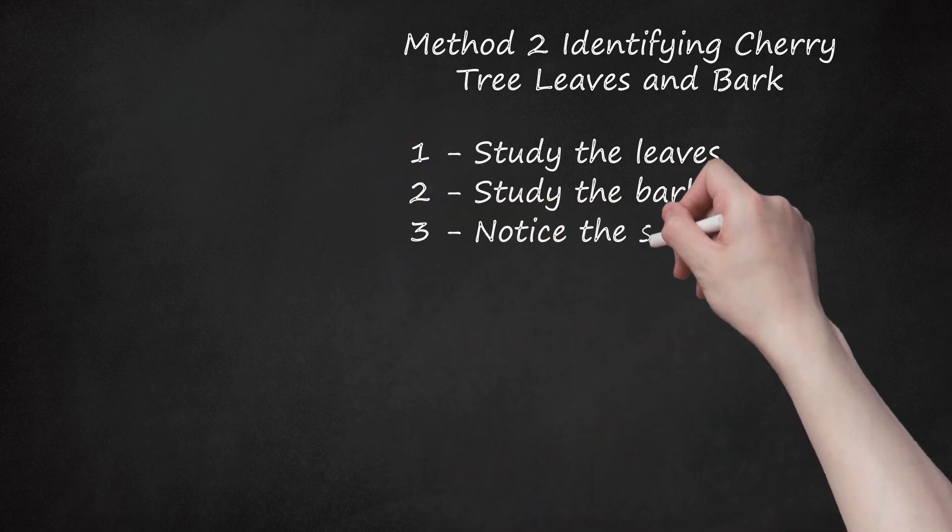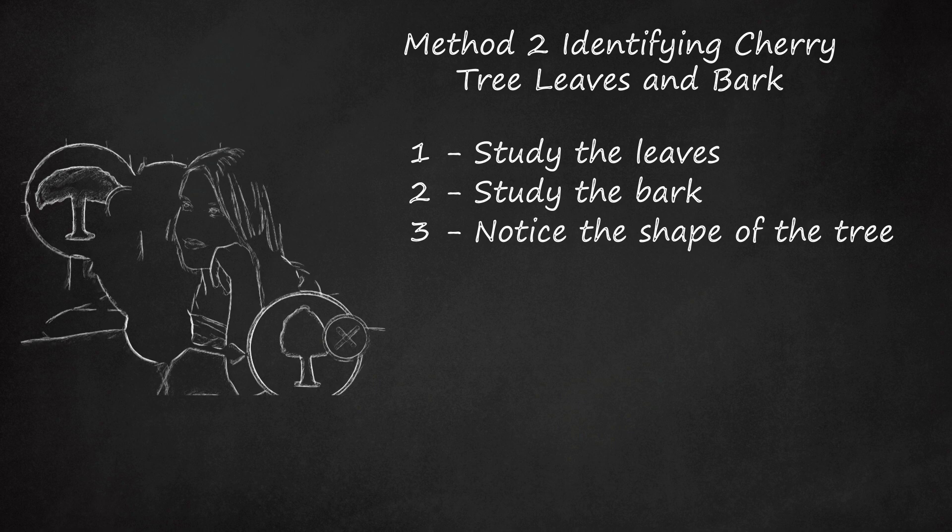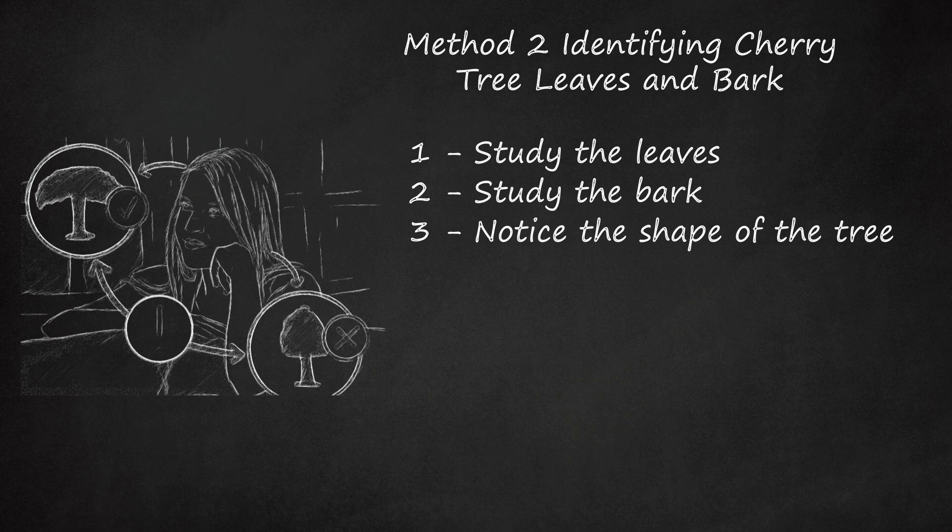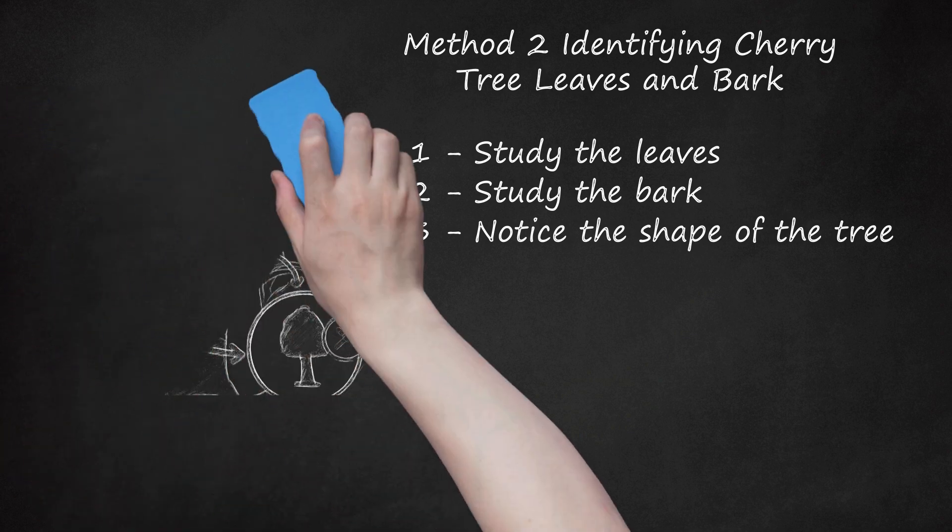Third, notice the shape of the tree. Mature cherry trees take on an umbrella shape. The branches are spreading, meaning the top of the tree looks wider than the bottom. In contrast, plum trees look round or oval, and pear trees look oval or teardrop shaped.